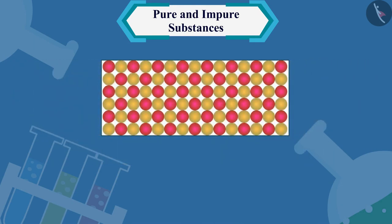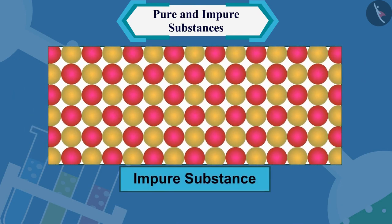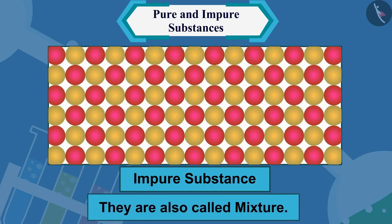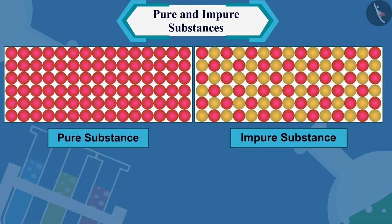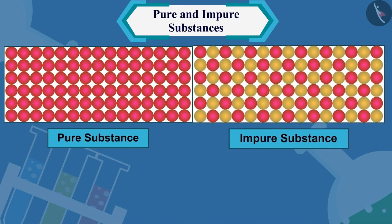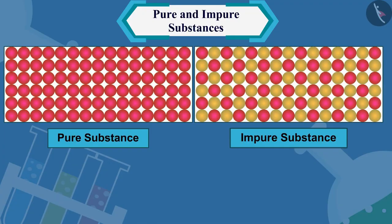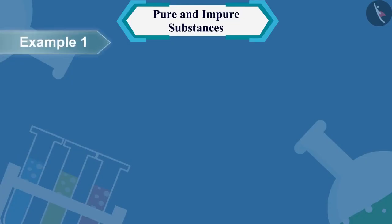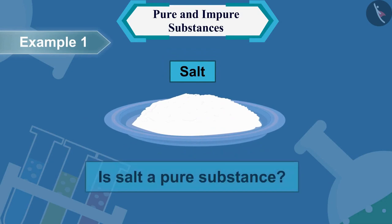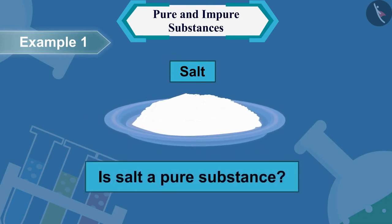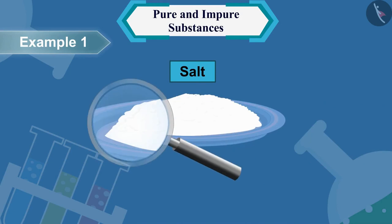So now you must be thinking — what are impure substances? The substances that are formed by mixing two or more pure ingredients are called impure substances. They are also called mixtures. Let us now learn more about pure and impure substances through some examples.